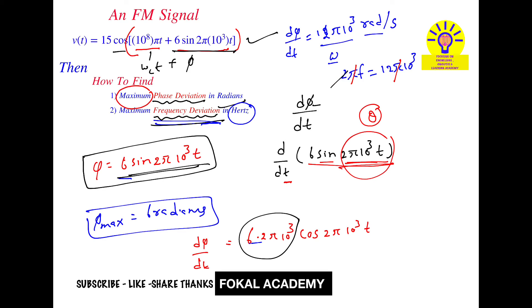From this we get 6 × 10³, so f = 6000 Hz. The maximum frequency deviation is 6000 Hz.